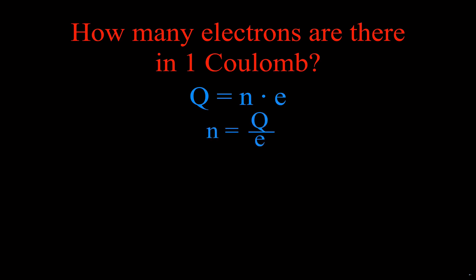So n is equal to, if you rearrange that, q divided by e. We want to know one coulomb of charge and we know that the charge on an electron and the charge on a proton, one is negative one is positive, but that elementary charge is 1.6 times 10 to the minus 19 coulombs. That's the charge on an electron.